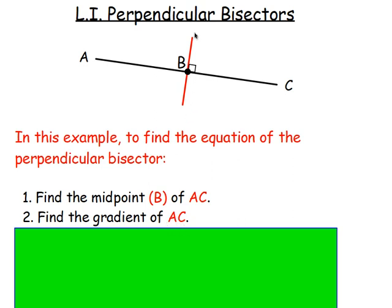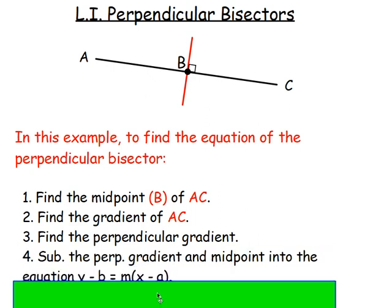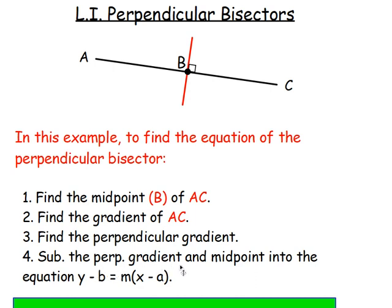But because this red line here is perpendicular, then you have to work out the perpendicular gradient. So flip the gradient upside down, change the sign, and you'll work out the gradient of that red line. After that gradient, you will have point. Yes, you'll have that. So you can then use the equation. So sub the perpendicular gradient and the midpoint into the general equation, y minus b equals m bracket x minus a.